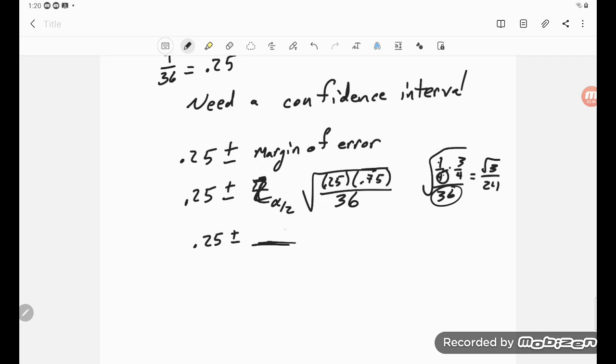So like, if you're going for a 95% confidence interval, that would be 1.96, and times your square root of 3 over 24.